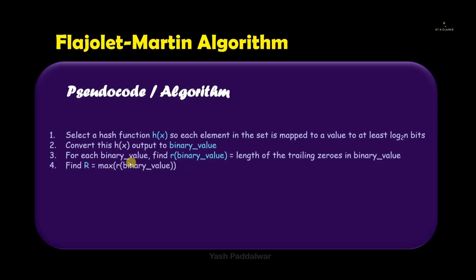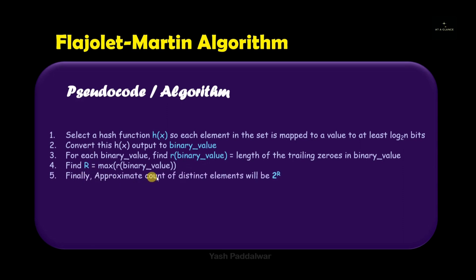After counting the trailing zeros in all the numbers, we need to find out the maximum of them. Whichever is the maximum, we store it in the variable capital R, and this R variable is what we were looking for. Once you get this R variable, the approximate count of the total number of distinct elements present inside the stream will be 2 to the power R. So if your R variable value is 4, then the approximate count will be 2 to the power 4, which is 16.